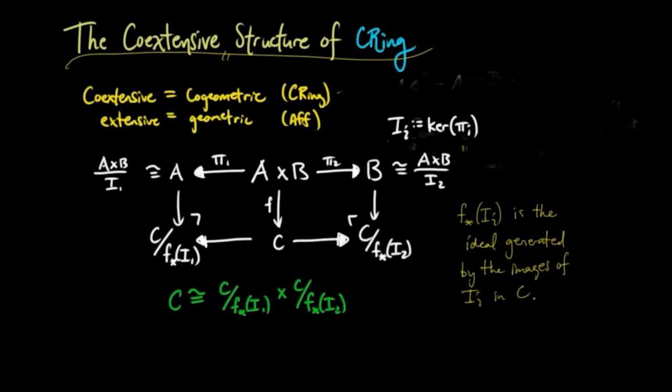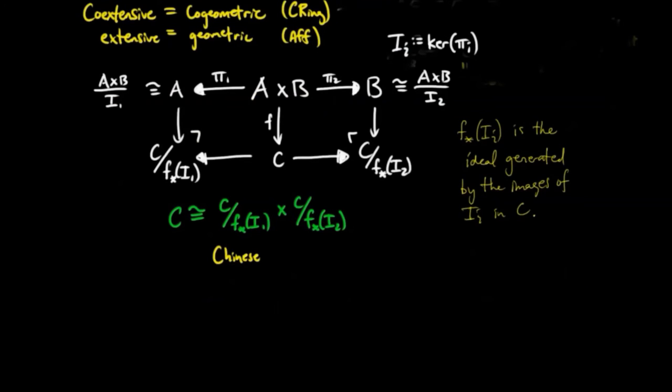The isomorphism can be proven by using the Chinese remainder theorem. We see that the sum of the two ideals F lower star I1 plus F lower star I2 generate C.